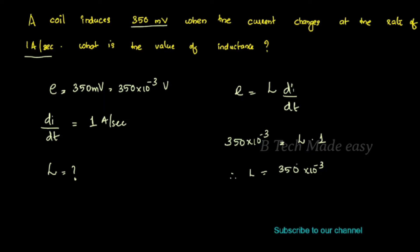Therefore, L = 350 × 10⁻³ Henry, which can also be written as 350 millihenry.